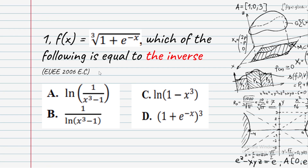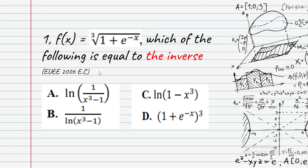First of all, let's set up the problem. f of x equals the cube root — the third root — of 1 plus e to the power of minus x. Replace f of x with y: y equals the cube root of 1 plus e to the power of minus x.